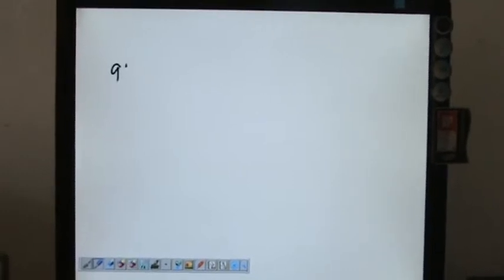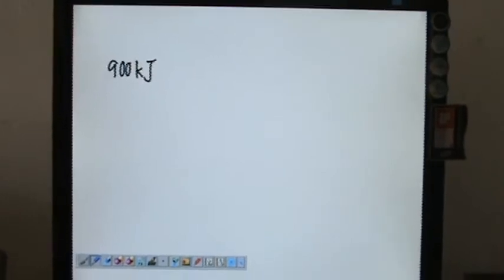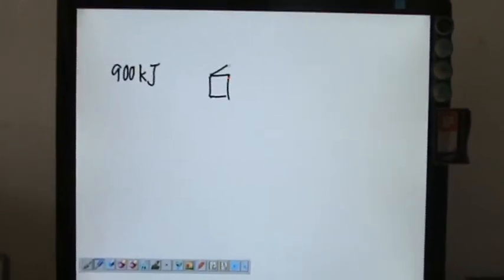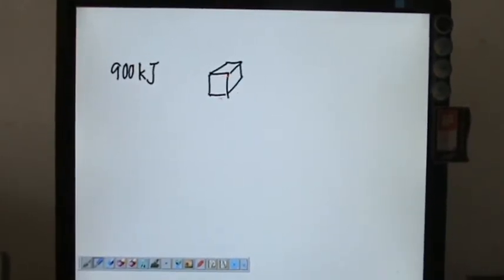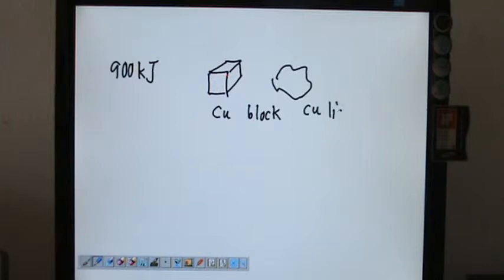Another example: they mentioned that in the question, 900 kilojoules of heat is required to melt a block of copper. This is a copper block. They mentioned that 900 kilojoules of heat is required to melt this copper block into its melting point, so it becomes copper liquid, transforming the phase to copper liquid.